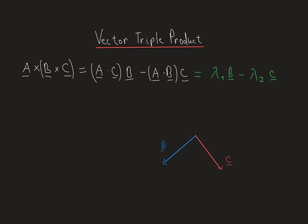If we draw out the resulting vector, we get a vector that is directly perpendicular — let's call it b cross c. So what's important to note is that b cross c is directly perpendicular to both c and b.